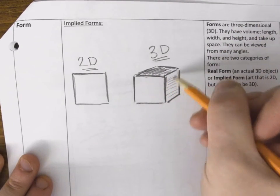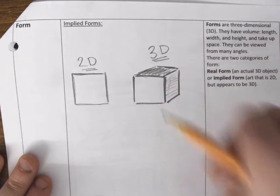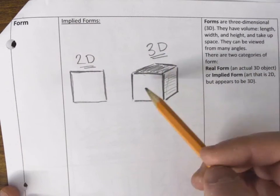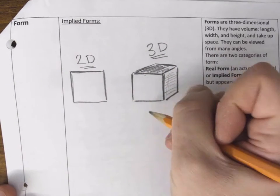One side, two side, and three side, okay? Once it appears 3D because of the way that I drew it, it's now a form.